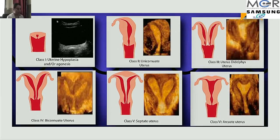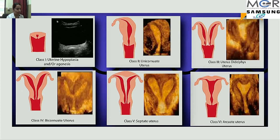Mullerian anomalies are structural anomalies of the uterus classified as follows: Class 1 is uterine hypoplasia or agenesis — complete absence of the uterus and cervix. Class 2 is unicornuate uterus. Class 3 is uterine didelphys, where the two uterine segments are completely separate. In bicornuate uterus, two endometrial cavities are separate with a fundal indentation less than 1 cm and same myometrium. In septate uterus, a septum divides the cavities but the uterine contour is normal. Arcuate uterus is a normal variant with a slight fundal indentation less than 1 cm.